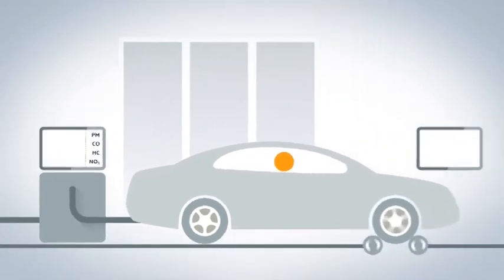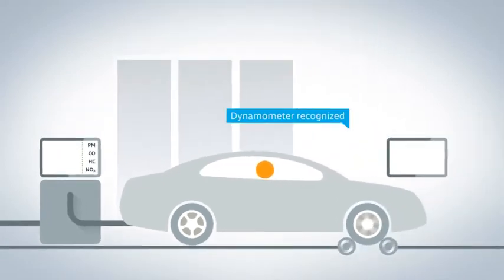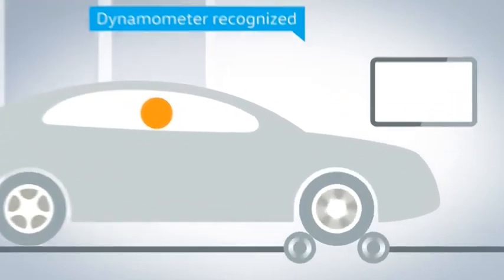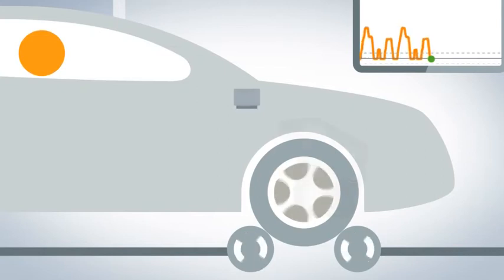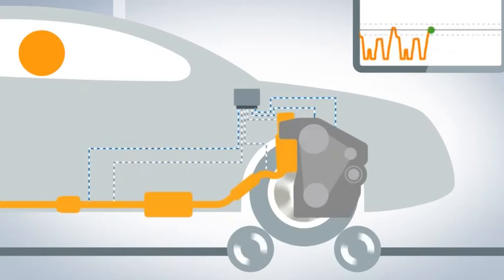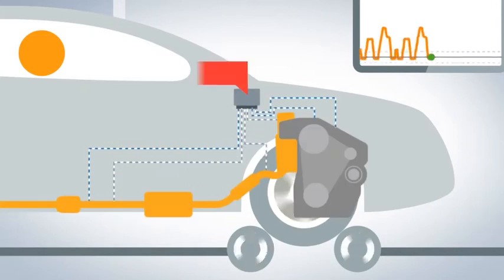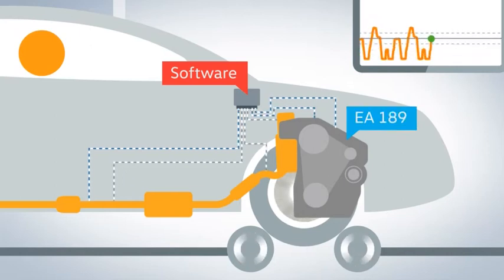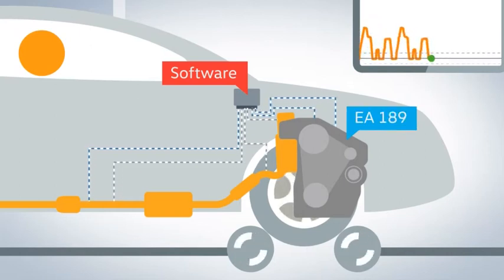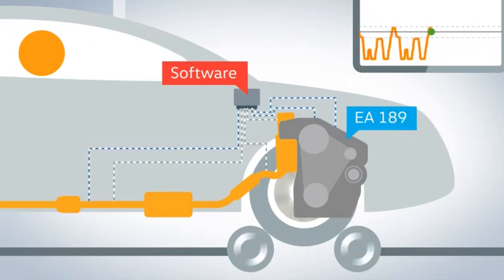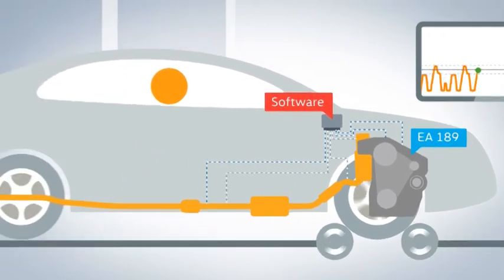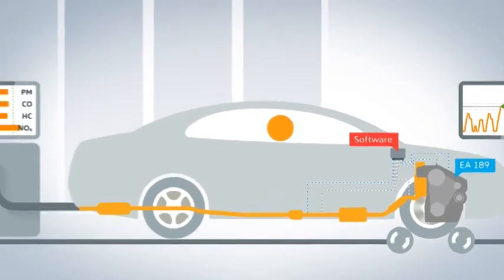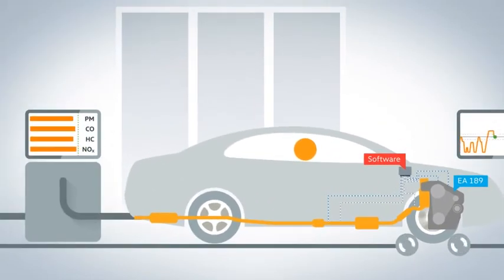A vehicle needs to recognize that it stands on the dynamometer — otherwise its ABS would block the drive wheels, for example. Software installed in vehicles fitted with EA 189 diesel engines adjusts the emissions during dynamometer tests by changing the exhaust gas recirculation rate. This ensures that compliant emission levels are reached only during the test cycle. This mode is deactivated under normal operating conditions.